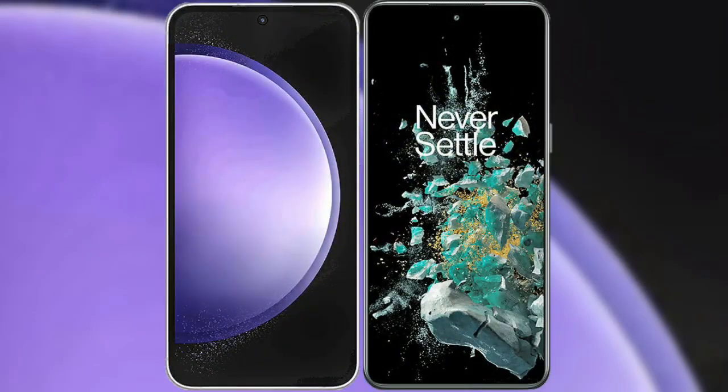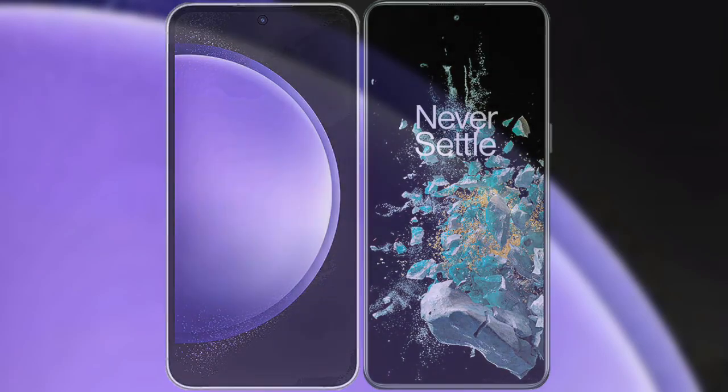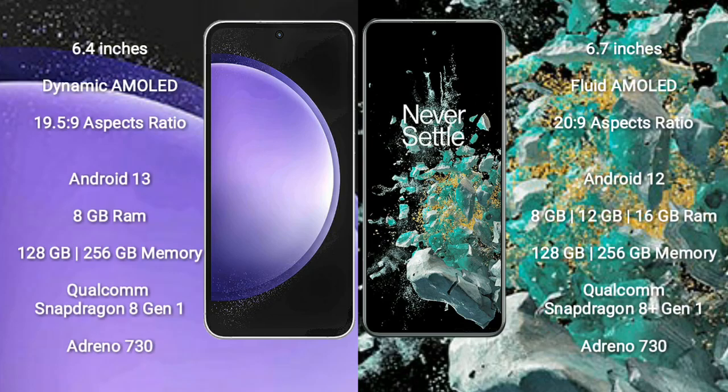I will compare the new Samsung Galaxy S23 FE with OnePlus 10T. Samsung Galaxy S23 FE comes with a 6.4-inch Dynamic AMOLED Display and aspect ratio 19.5:9. OnePlus 10T comes with a 6.7-inch Fluid AMOLED Display and aspect ratio 20:9.